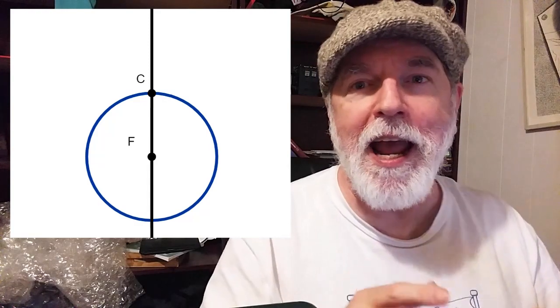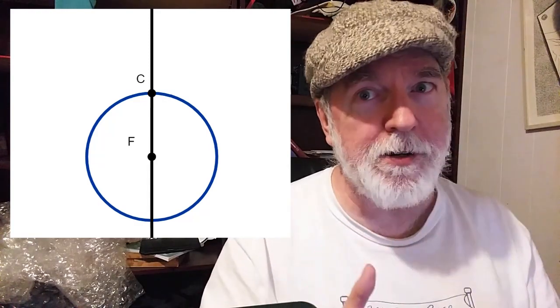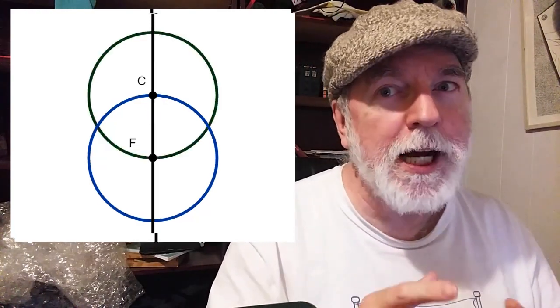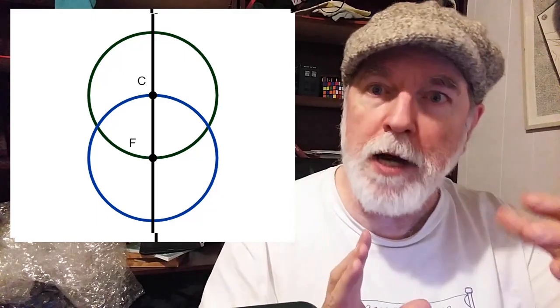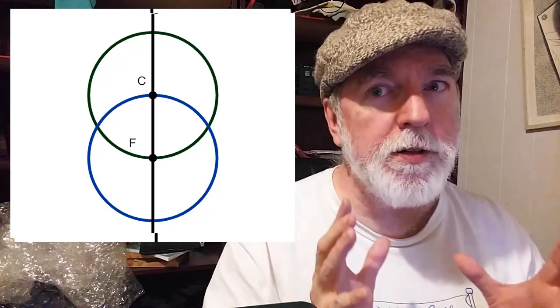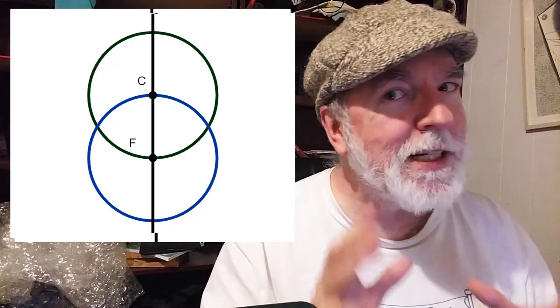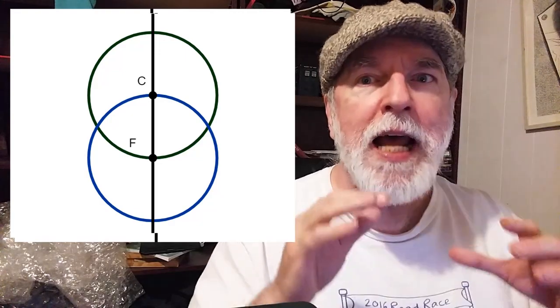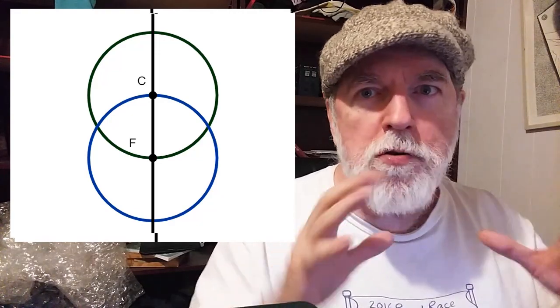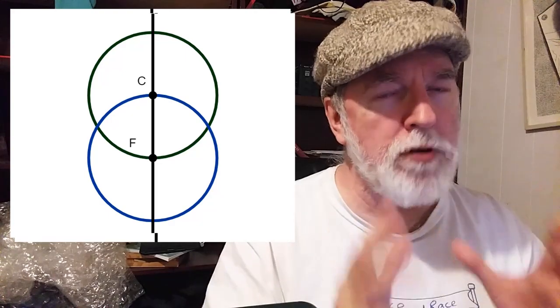Now we draw another circle with C as our center that intersects point F. So now we've got two identical circles, and this is a construction which you would see in Euclid's first proposition.